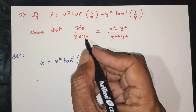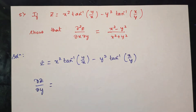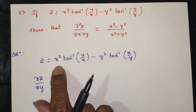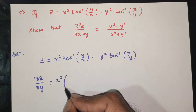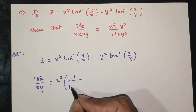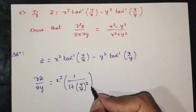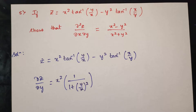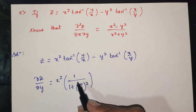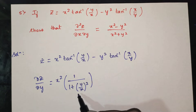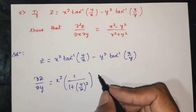Solution: z is equal to x square into tan inverse of y by x minus y square into tan inverse of x by y. First we find dou z by dou y. Treating x square as constant, we differentiate: 1 by 1 plus y by x whole square, with respect to y, with 1 by x as constant.